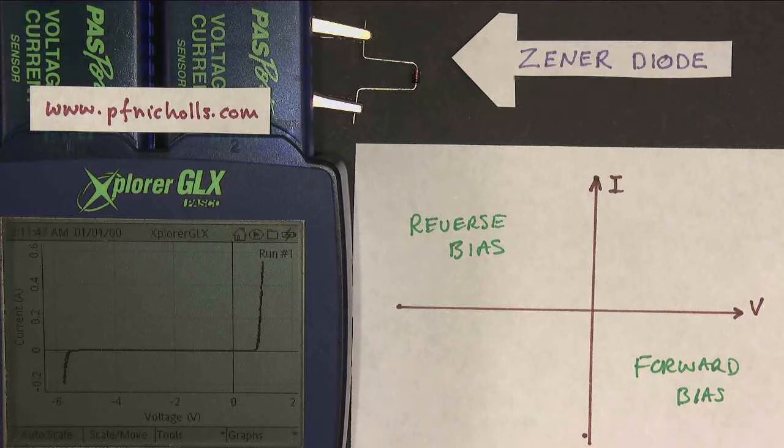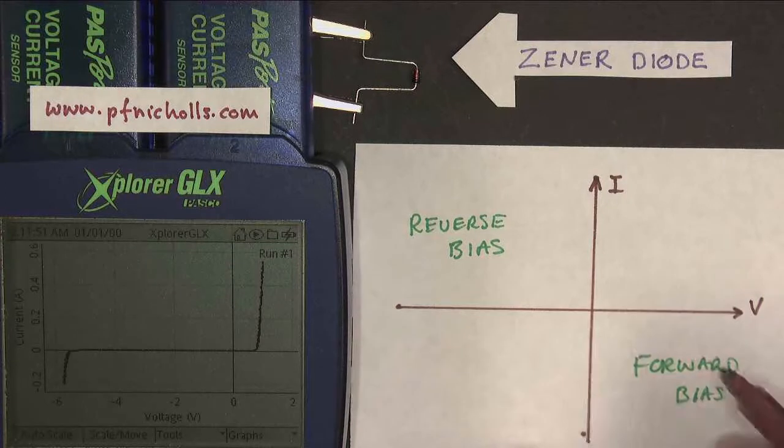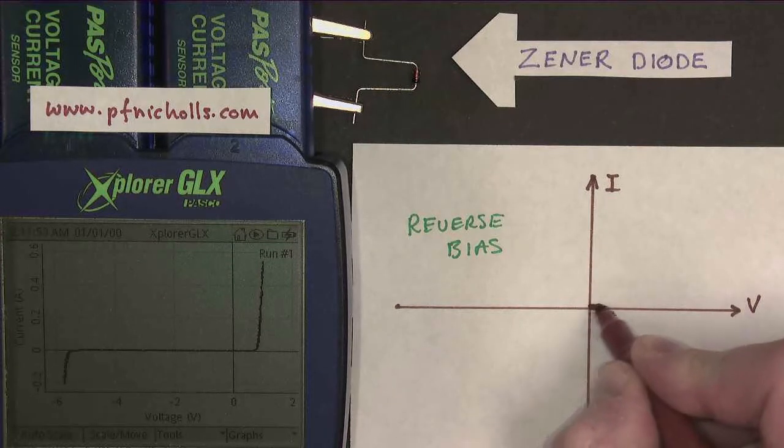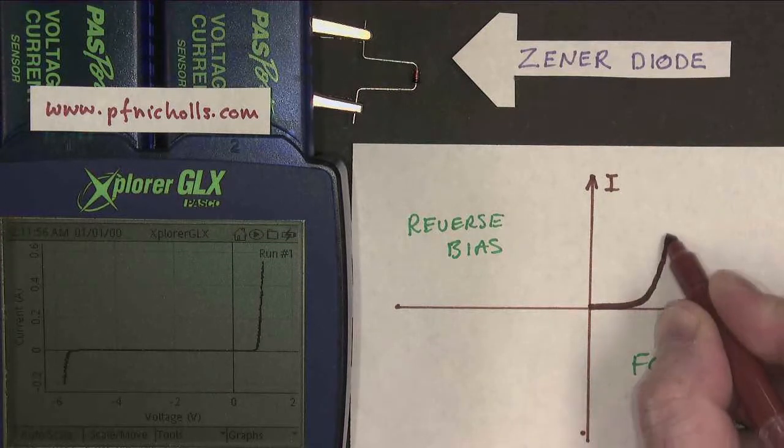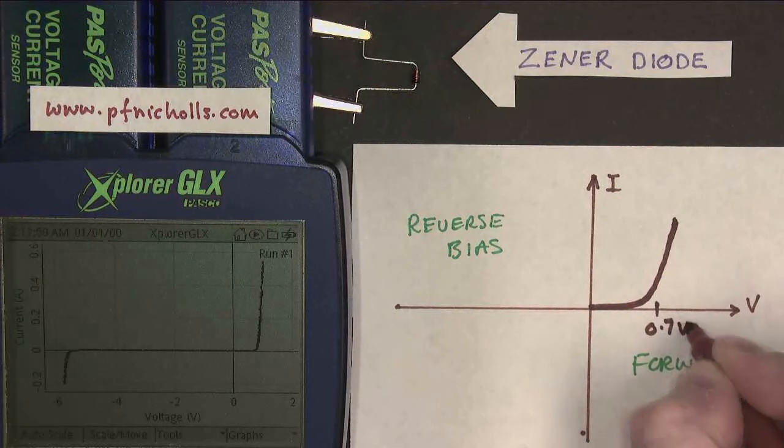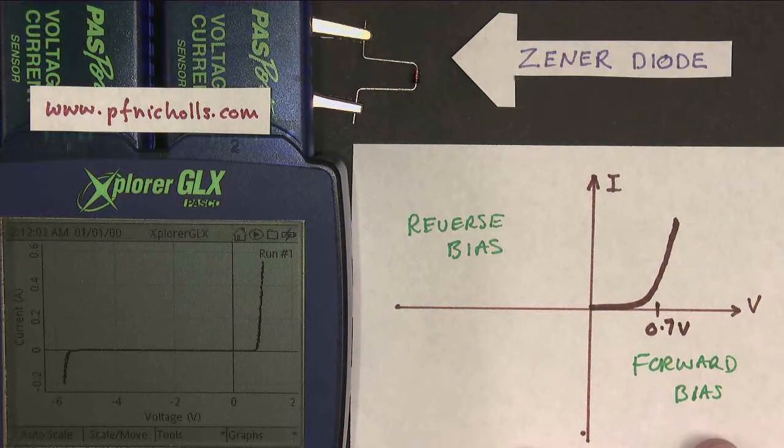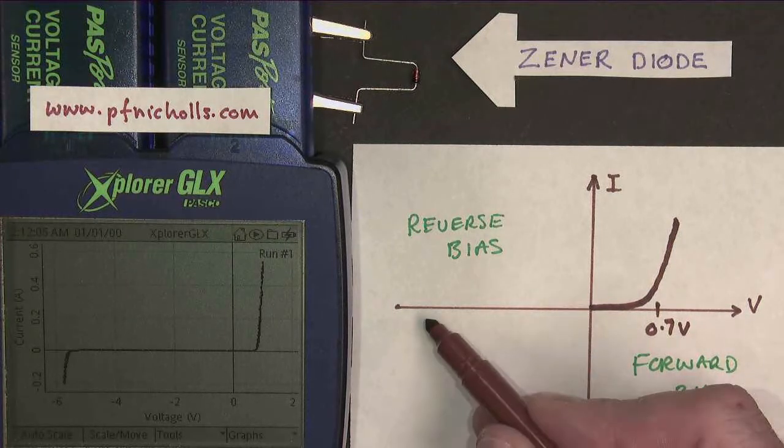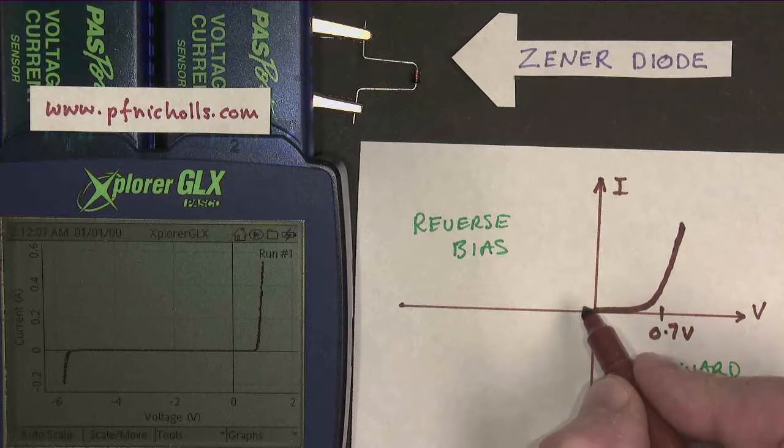So, if we put that onto our own graph, what we have is the forward bias section. We have the graph of a silicon diode, which looks something like that, and this here is labeled as 0.7 volts. I'm not under any obligation to use the same voltage scale in that direction as in that direction, so I'm not going to, and textbooks often don't either.